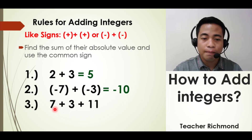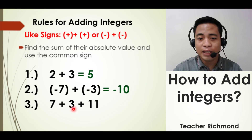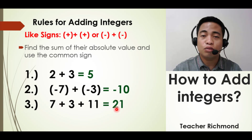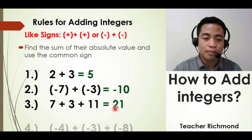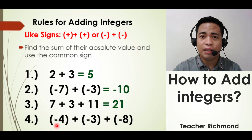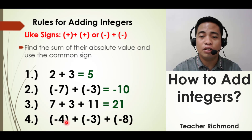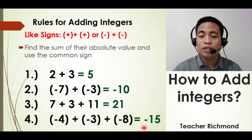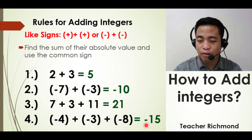Next example: positive 7 plus positive 3 plus positive 11. Find the sum of their absolute values — you get 21 — and the common sign is positive, so the answer is positive 21. Next example: negative 4 plus negative 3 plus negative 8. Find the sum of their absolute values: 4 plus 3 plus 8 equals 15, and the common sign is negative, so the answer is negative 15.